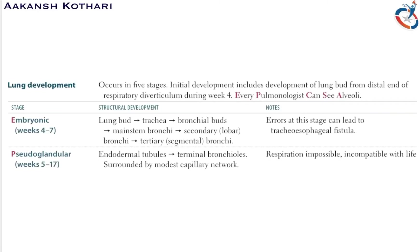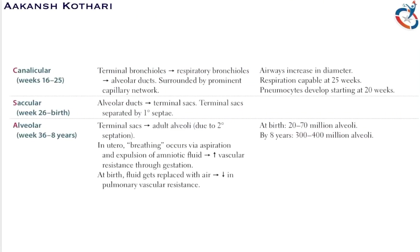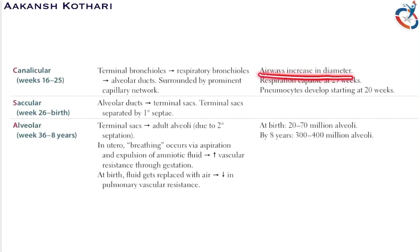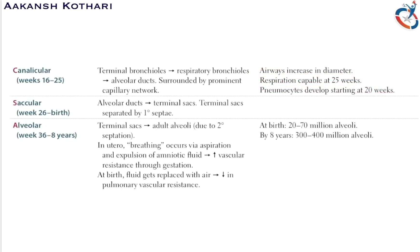The canalicular phase lasts from week 16 to week 25. Terminal bronchioles are converted into respiratory bronchioles, which are further converted into alveolar ducts. The airway diameter increases, and the capillary network becomes prominent. Pneumocytes develop at week 20, and respiration becomes capable at week 25.